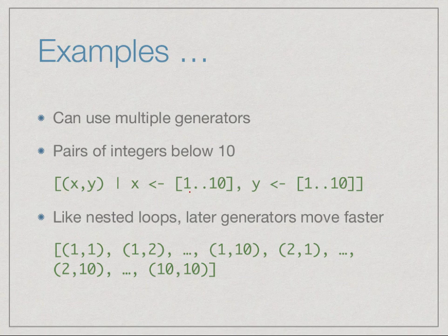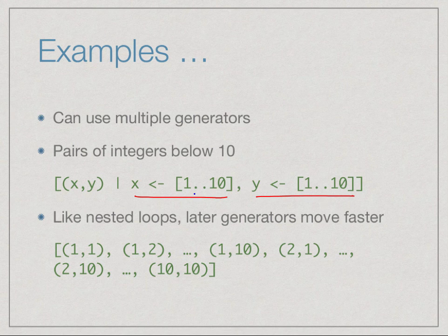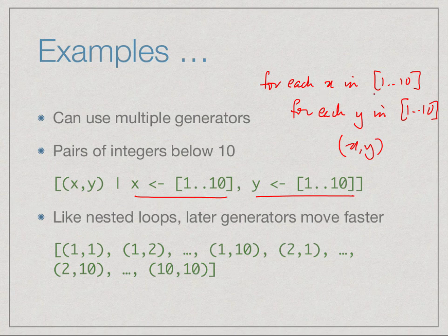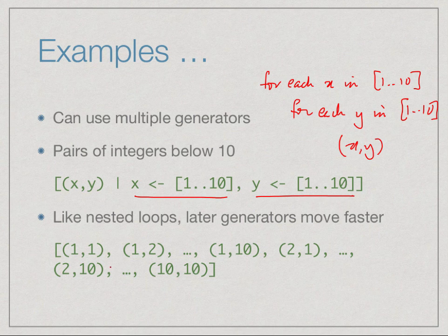So far we have seen examples using only one generator, but we can use more than one generator. This says: let x run through the list 1 to 10, let y run through the list 1 to 10, and construct the list of all pairs (x, y). For each x in range 1 to 10, for each y in 1 to 10, produce (x, y). The later generators move faster — x is fixed at 1 while y runs through 1 to 10, then x moves to 2, and so on.